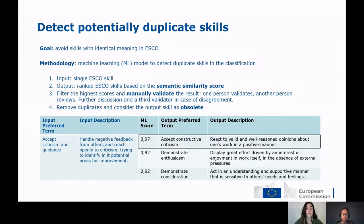We used the preferred term and description of the transversal skills as input to a semantic similarity model trained on large amounts of text data, which identifies the most semantically similar ESCO skills. For example, the new transversal skill 'accept criticism and guidance' matched closely with the existing 'accept constructive criticism,' which was then marked as obsolete. This will appear in the delta file signed as obsolete.